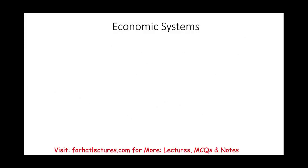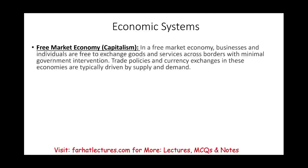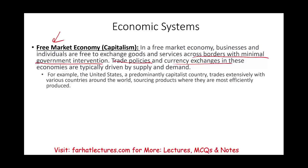You also need to understand what type of economic system you are operating in. There are many, but the two extremes are free market economy — capitalism — and communism. In a free market economy, businesses and individuals are free to exchange goods and services across borders with minimal government intervention. Trade policies and currency exchanges are typically driven by supply and demand. The US is a good example. If you operate in a free capitalist system and deal with another free capitalist system, you'll be looking for products and supplies where they are most cost-efficiently produced.